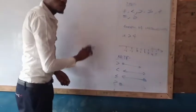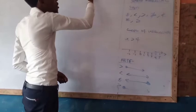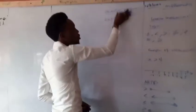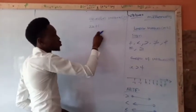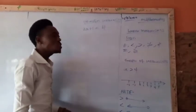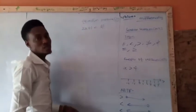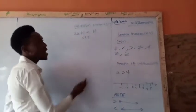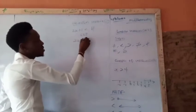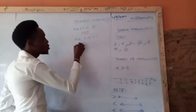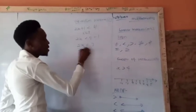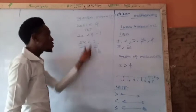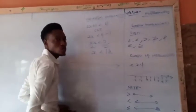Now let us look at equations of inequality. When we have 3s plus 1 less than 4, to solve this we solve it like a simple equation. First, collect the like terms: we get 2s less than 4 minus 1, so 2s less than 3. Divide both sides by 2, so s is less than 1 and a half.